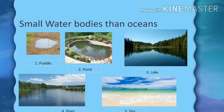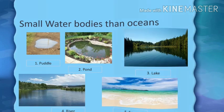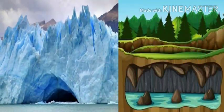The hydrosphere is the combined mass of water. It includes all water bodies like oceans, rivers, lakes, ponds, sea, glaciers and underground water.